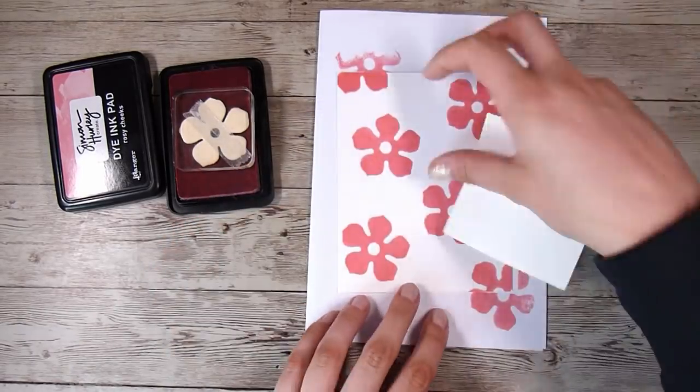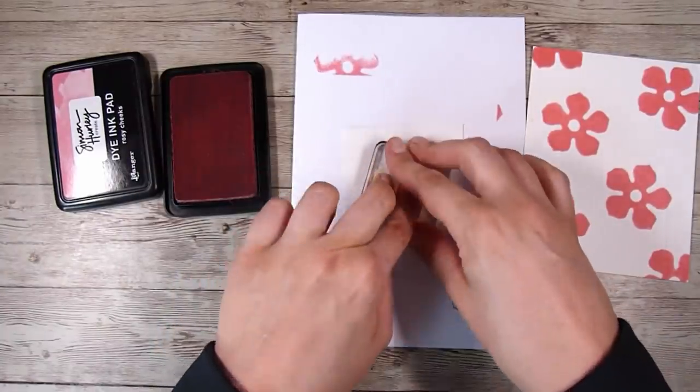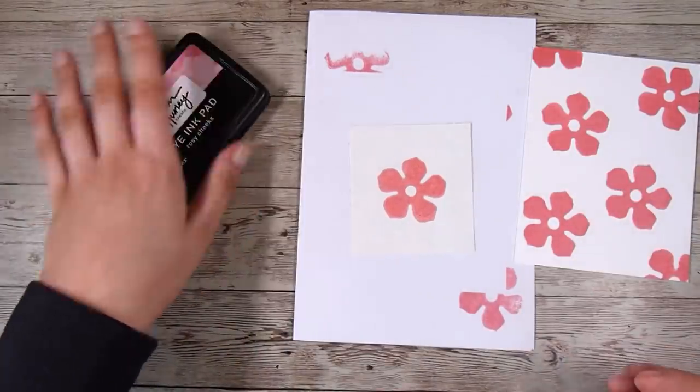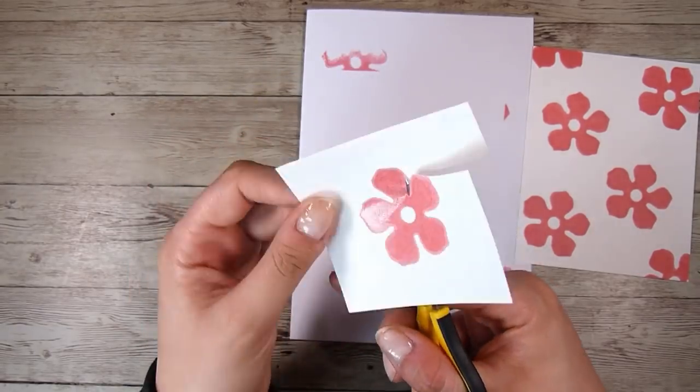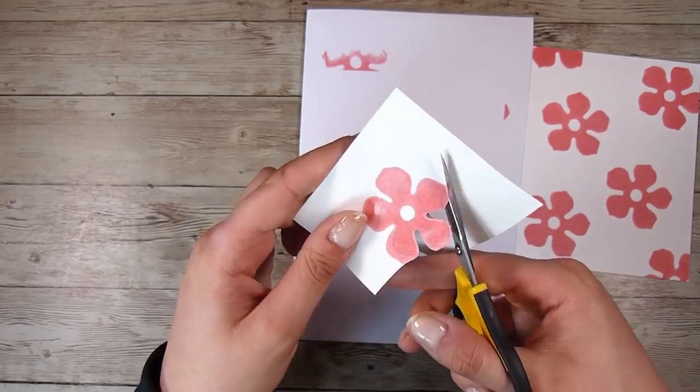Now here I have a little square of Gina K masking paper. This is my favorite masking paper. And I'm just going to take the stamp whilst I have it and stamp one of them on that little square there. This masking paper is fantastic because it holds up to so much ink and it doesn't bleed through, which is really important to me.